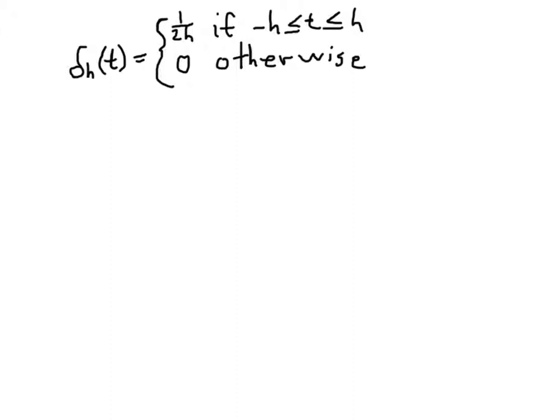What I'd like to do is think about what delta sub h of t minus c is. Now we discussed this in the last video. We're taking c to be greater than zero. So what this is is actually just the same function but shifted to the right so that it's centered at c.